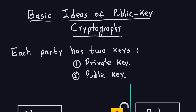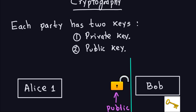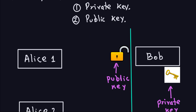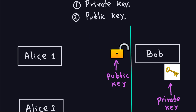Let me show you this idea with locks and keys. Let's say we have Alice and Bob, and Alice wants to send a secret message to Bob. On Bob's side, Bob will have two keys as mentioned: a public key, which we can imagine as a lock that is currently unlocked, and a private key, which is the key that can open that lock. If Alice wants to send a message to Bob, she can use that public key to lock the message — in other words, to encrypt it.